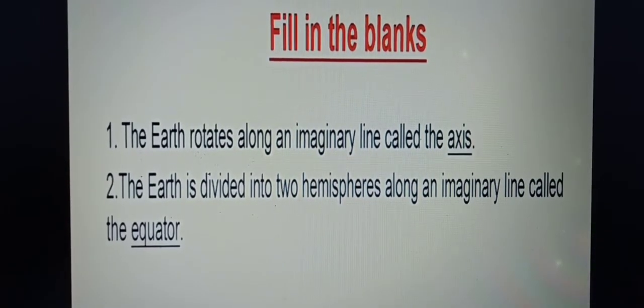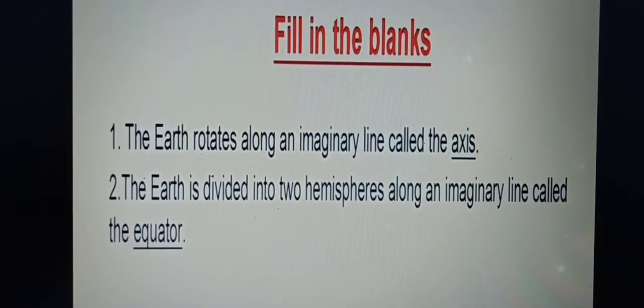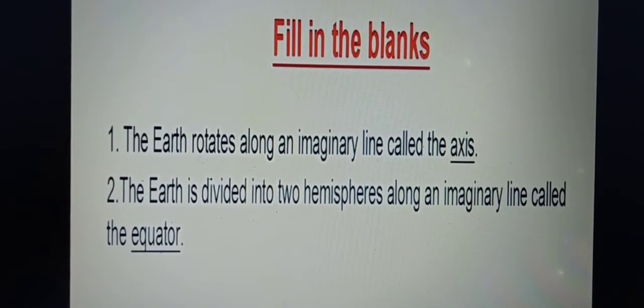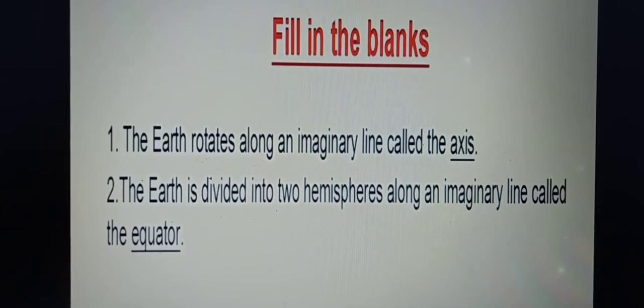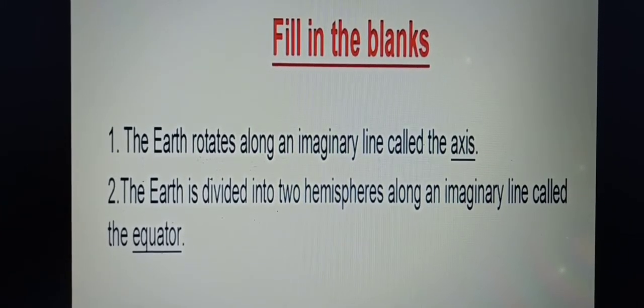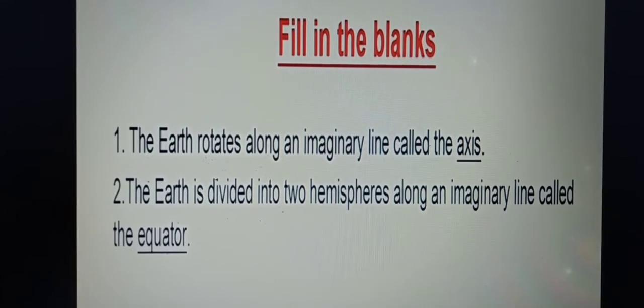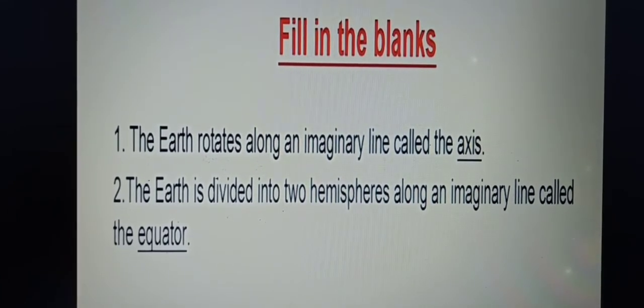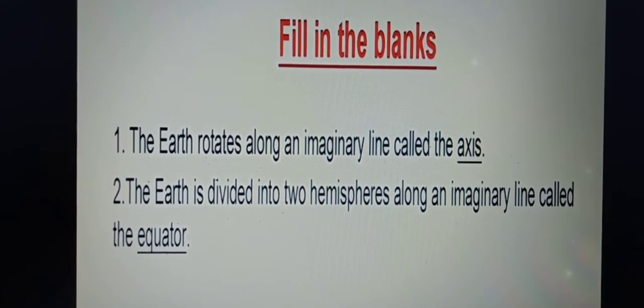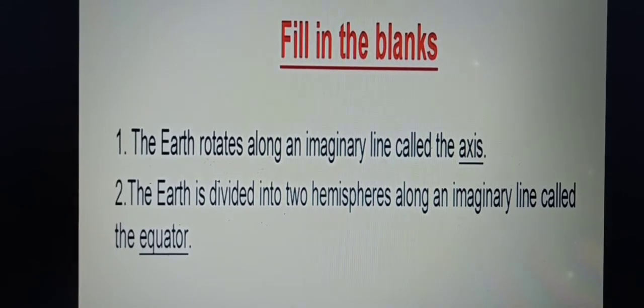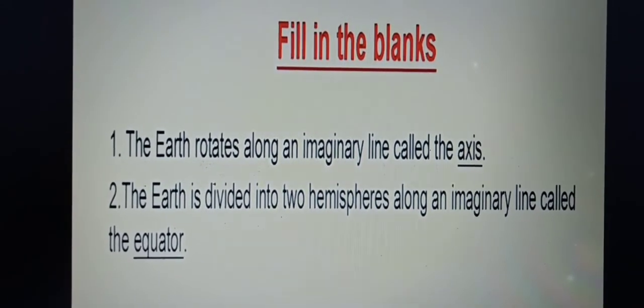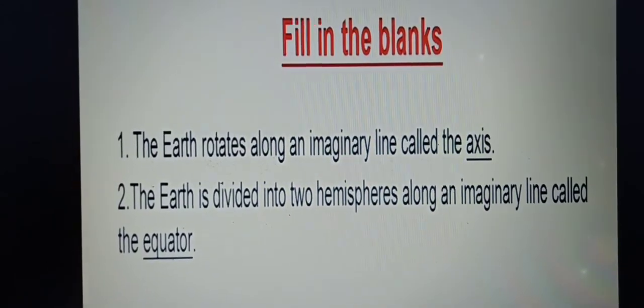So first is fill in the blanks. This one you should do only in your content book. You should write in pencil. The first one is the earth rotates along an imaginary line called the axis. Second, the earth is divided into two hemispheres along an imaginary line called the equator.